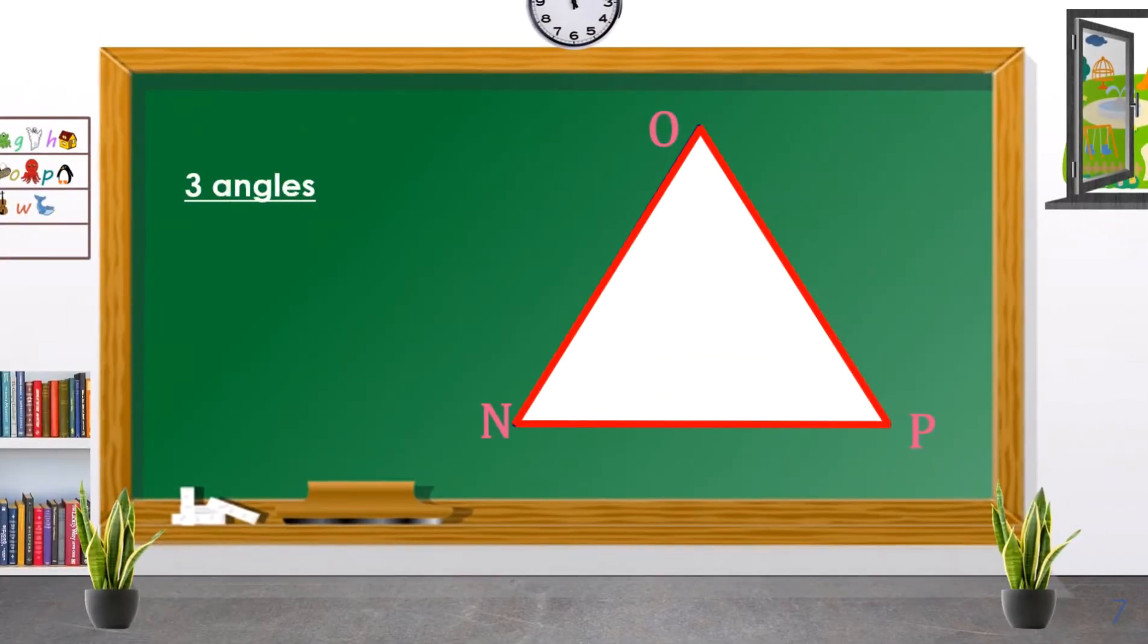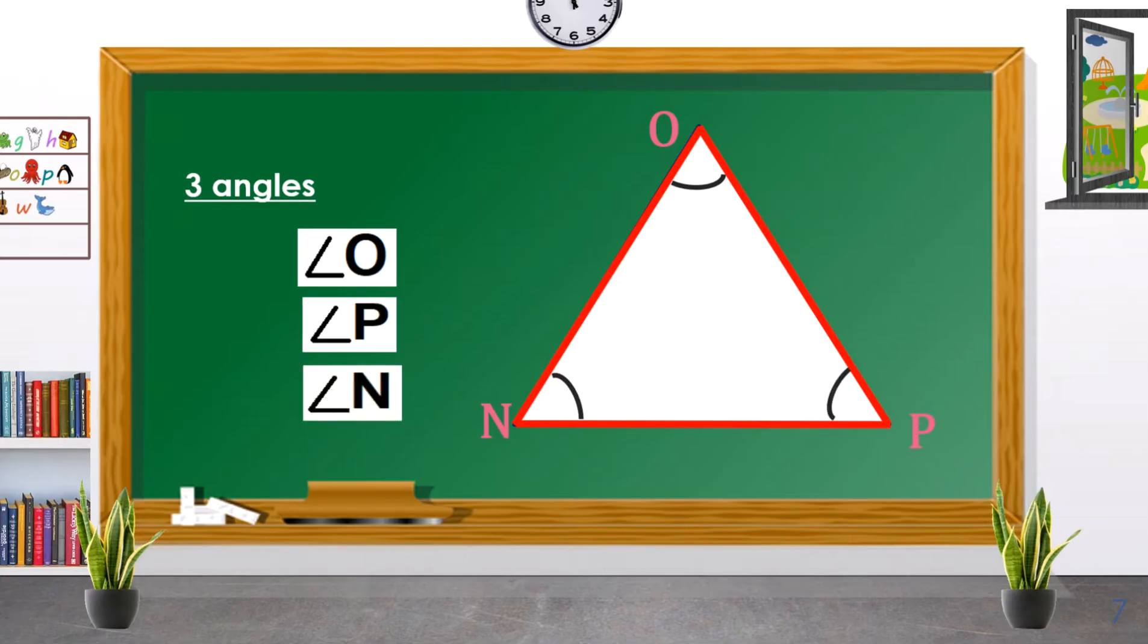The triangle has three angles. In this figure, we can name them as angle O, angle N, and angle P.